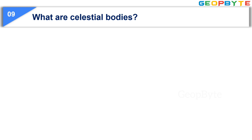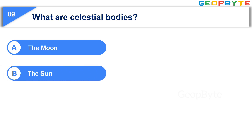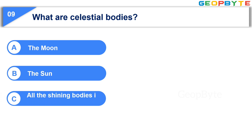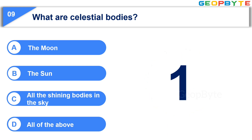Moving to the next question: What are celestial bodies? Option A: The moon. Option B: The sun. Option C: All the shining bodies in the sky. Option D: All of the above. Your time starts now. Your time is up and the correct answer is Option D: All of the above — that is, the moon, the sun, and all the shining bodies in the sky.